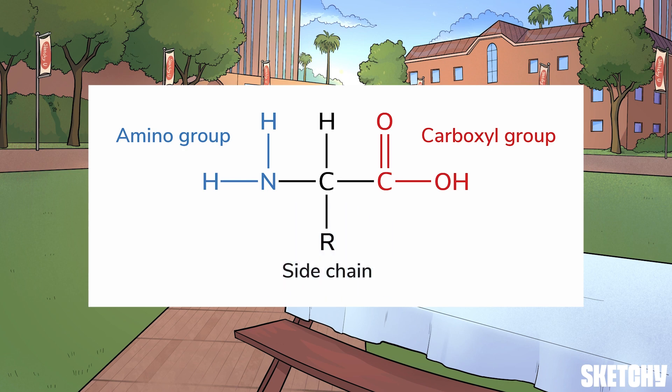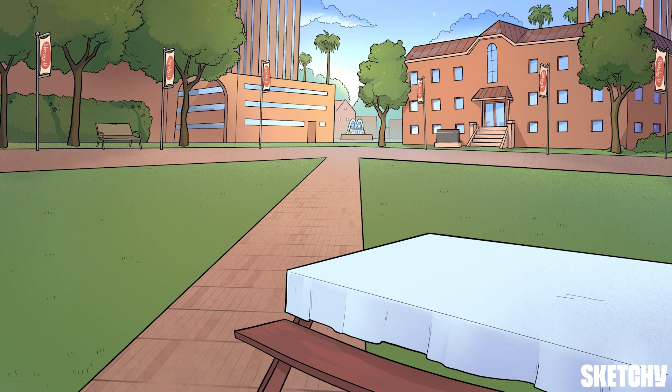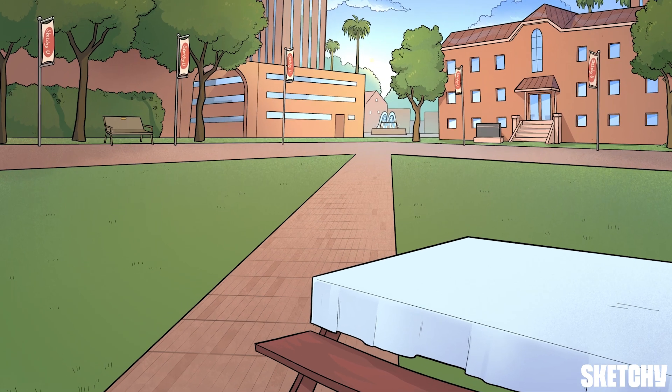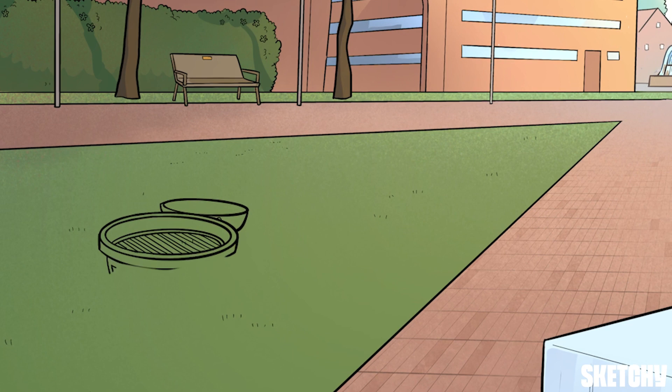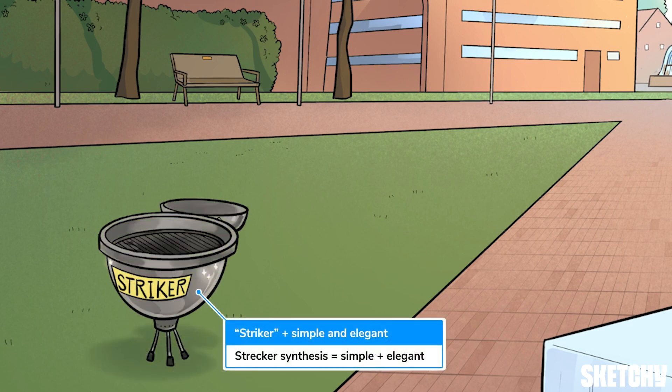When scientists want to make these molecules in the lab, there are two main methods they use — the Strecker synthesis and the Gabriel synthesis. You don't need to worry about memorizing every single bond that breaks and forms during these processes; just focus on the overall idea of each synthesis. We'll start with the Strecker synthesis, which we've symbolized with this Stryker brand grill. This synthesis is a bit simpler and more elegant than the Gabriel process, which is why the Stryker grill is simple but sleek.